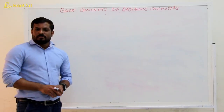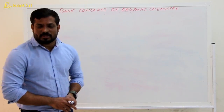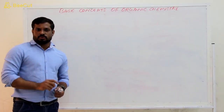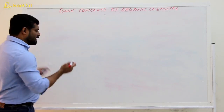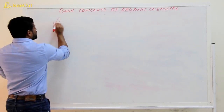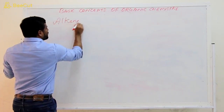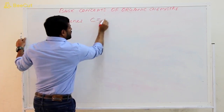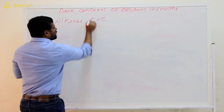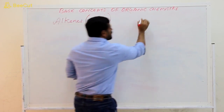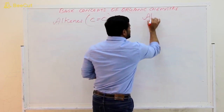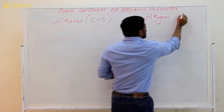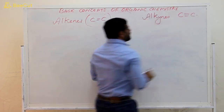Now we are going to discuss about unsaturated compounds. Unsaturated compounds fall into two categories: the first one is alkenes, which have a carbon-carbon double bond; and the second one is alkynes, which have a carbon-carbon triple bond.